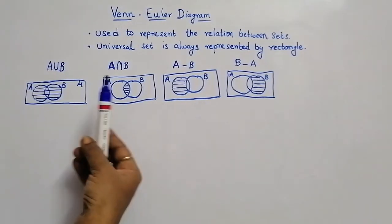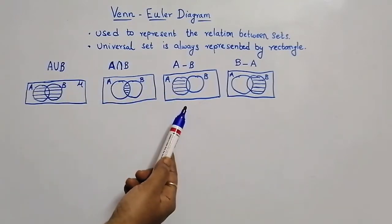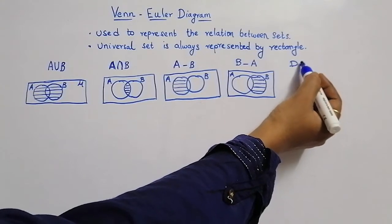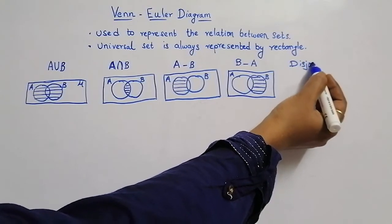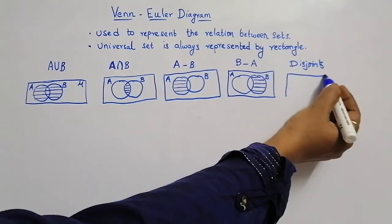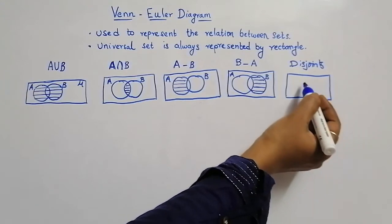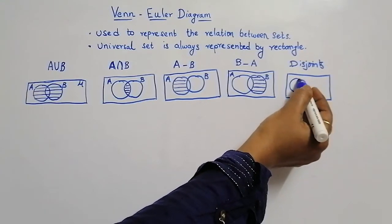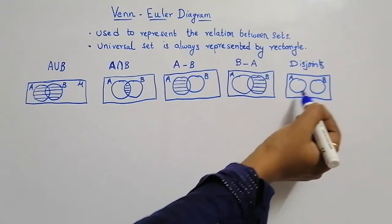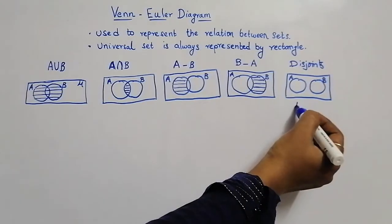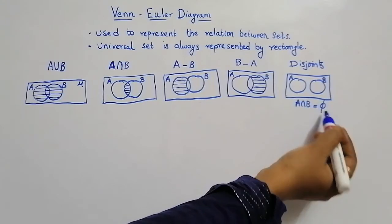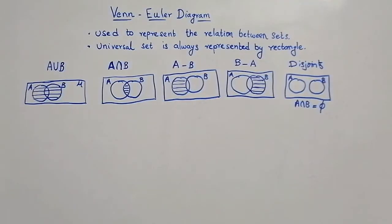So this is the representation for union, intersection, subtraction, and also disjoint sets. Disjoint sets means the intersection is a null set — there are no common elements. Set A and set B are drawn with no overlap, so A intersection B is always a null set.